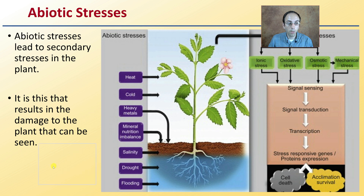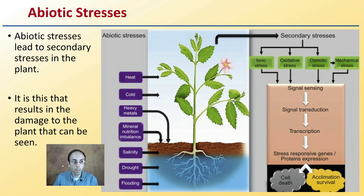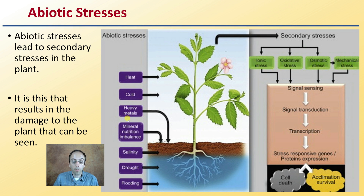When looking at abiotic stresses, they can lead to secondary plant stresses. Heat, cold, heavy metals, nutrients, salinity, drought, and flooding can all cause abiotic stresses that lead to secondary stresses on the plant.